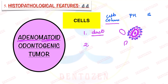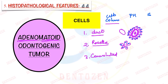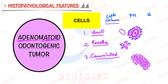The second pattern is the rosette pattern, where tumor cells are arranged like a rose. The third pattern is the convoluted pattern, where tumor cells are arranged in two layers — an inner layer and an outer layer arranged opposite to each other. The nuclei of these two cell layers are arranged away from each other. So those are three patterns for columnar or cuboidal cells: duct-like structures, rosette pattern, and convoluted pattern.